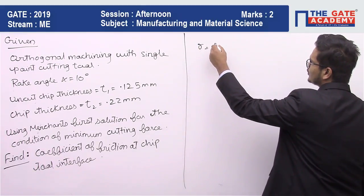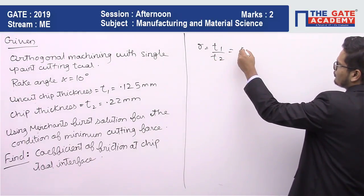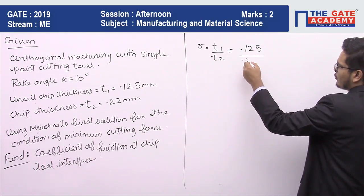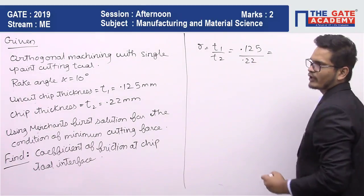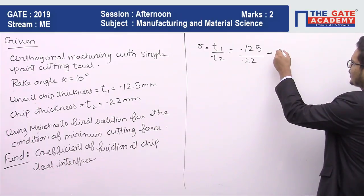R is equal to T₁ upon T₂. So this comes out to be 0.125 upon 0.22. So the value of r we get is 0.5681.